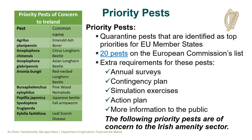Priority pests of concern to Ireland include: Agrilus planipennis, the emerald ash borer; Anoplophora chinensis, the citrus longhorn beetle; Anoplophora glabripennis, the Asian longhorn beetle; Aromia bungii, the red-necked longhorn beetle; Bursaphelenchus xylophilus, the pinewood nematode; Popillia japonica, the Japanese beetle; Spodoptera frugiperda, the fall army worm; and Xylella fastidiosa, leaf scorch disease.